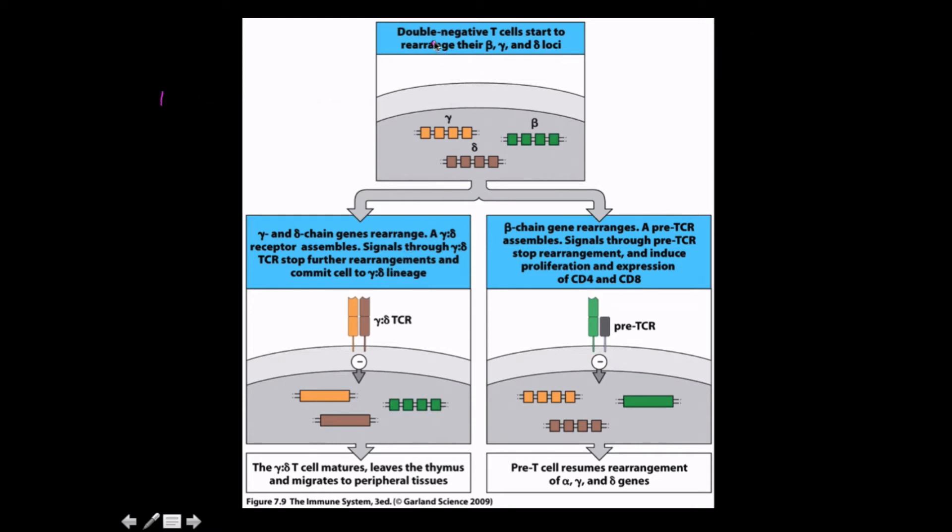The double negative T cell starts to rearrange their beta and gamma and delta loci, but the beta is just one whereas these are two, so he's going to reassemble himself faster usually. So the beta chain genes rearrange, a pre-T cell receptor is going to assemble, signal transductions through the pre-T cell receptors stop rearrangement and induce proliferation and expression of CD4 and CD8.